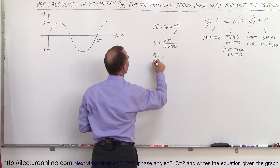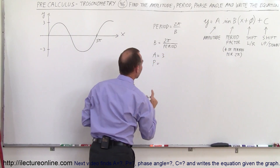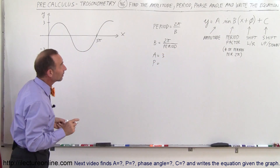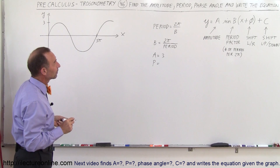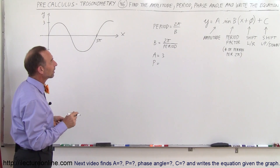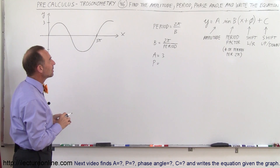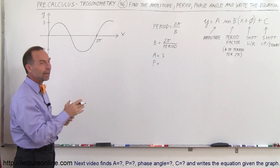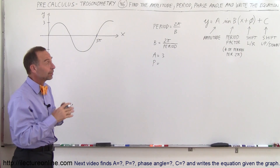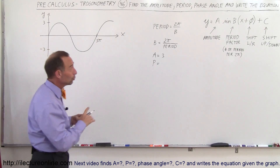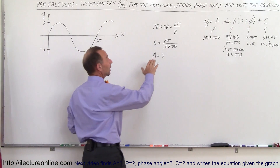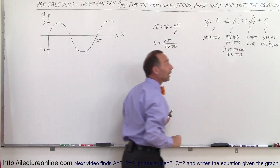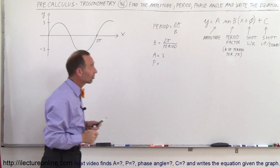The period — now that's different here. The period is 2π divided by b, or you could look at it as b is equal to 2π divided by the period. The reason why we want to do both is because we want to find b in order to write what the equation looks like.